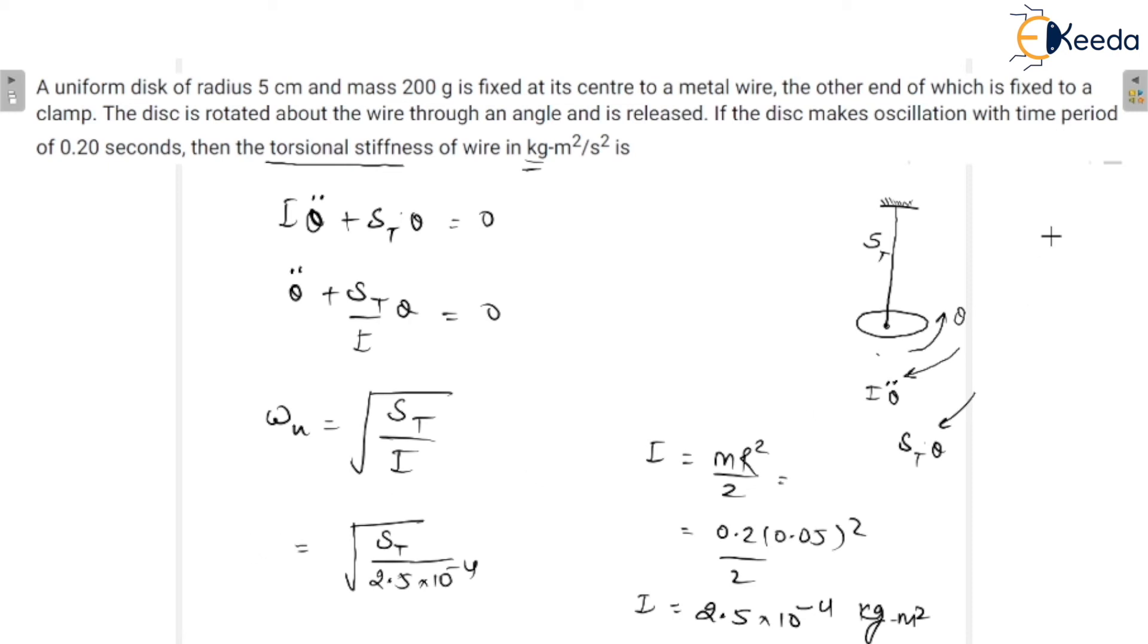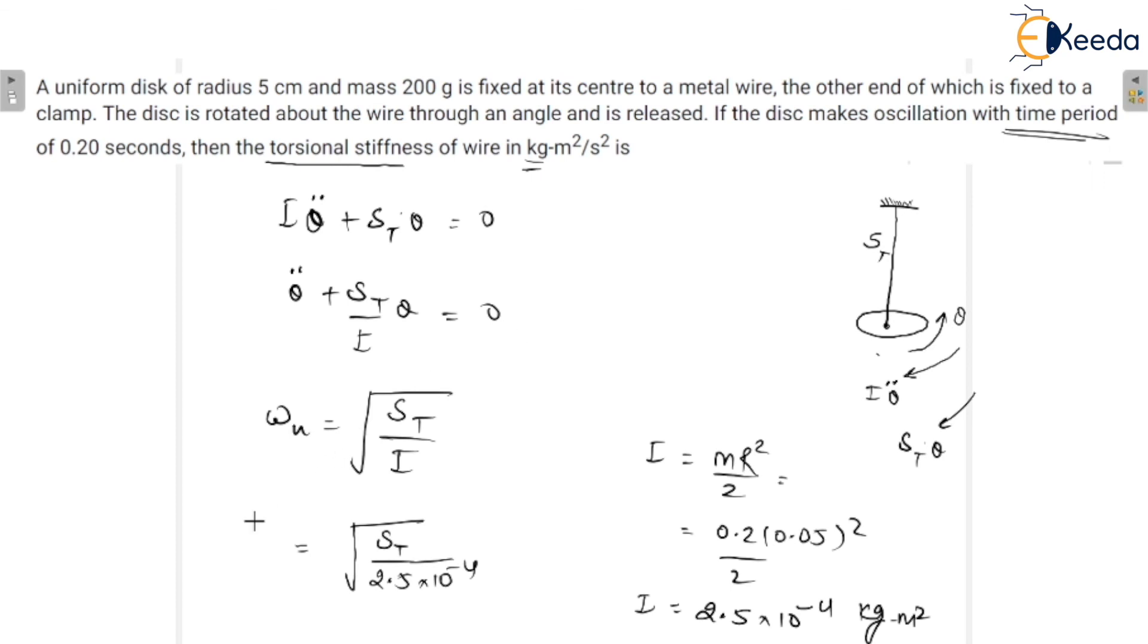In the question, omega_n is not given, but the time period of oscillation is given. So you know very well that the time period of oscillation T is equal to 2π upon omega_n. So we just have to put the value, that is 0.20 equals 2π upon omega_n. From here, we can calculate the value of natural frequency of vibrations that comes out to be 31.41 radians per second.